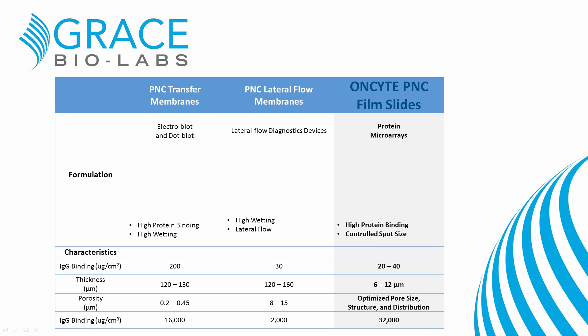First, I want to take a moment to describe on-site PNC. There are many types of nitrocellulose out there, but they differ quite substantially. For example, membranes for western blotting and diagnostic test strips have nitrocellulose formulations designed for those specific applications. They're both thick membranes, but differ in their binding capacities, porosity, and wetting characteristics.